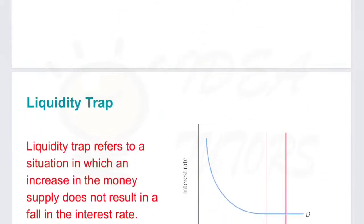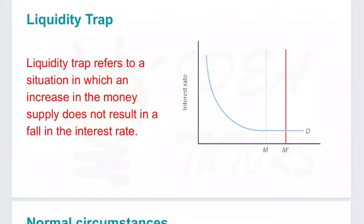In this video we will learn about liquidity trap. Liquidity trap refers to a situation in which even when money supply is increased, this increase in money supply does not result in any fall in interest rate. So money supply is increased but interest rate is not decreasing in this case.